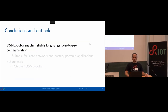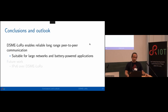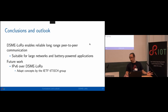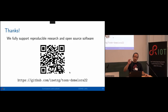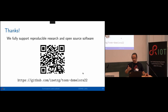In conclusion, DSME LoRa enables reliable, long-range, peer-to-peer communication. It is suitable for large networks and battery-powered applications. For future work, we would like to run IPv6 over DSME LoRa, adapting concepts from the IETF 6TiSCH group to also enable standard IP over O-QPSK transceivers on DSME. This work has three publications: a poster, a work-in-progress paper, and a journal paper with a more detailed version of this presentation. We fully support reproducible research and open-source software — please feel free to get the source code of the simulation environment, the RIOT implementation of DSME, and the simulation and experiment results.